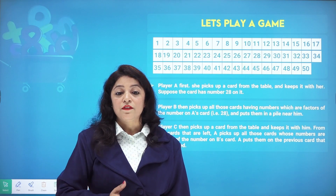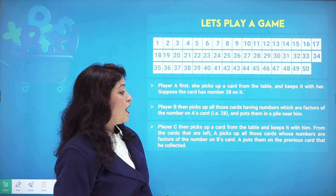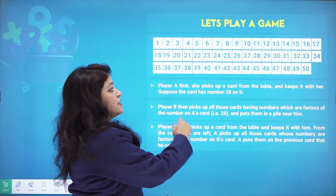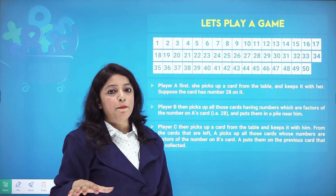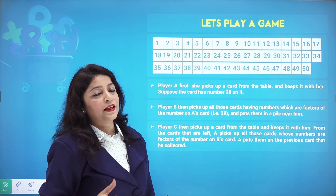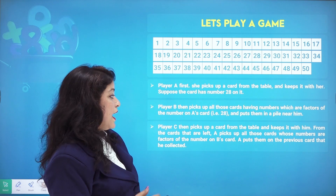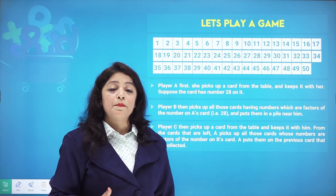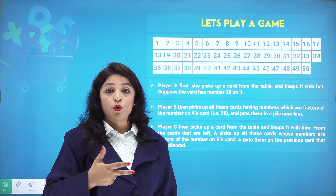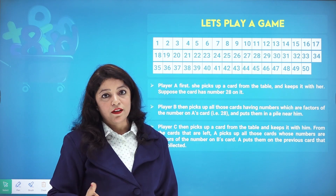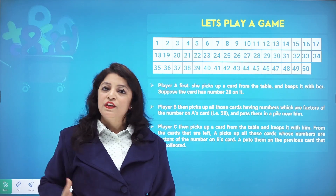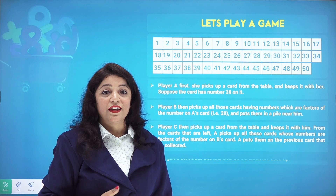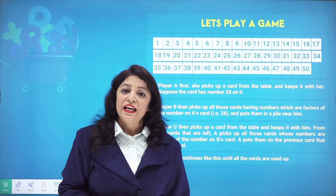Now Player C enters the game. Player C picks a card from the remaining cards on the table, and then finds all the factors of the numbers on Player B's cards — that is, the factors of 1, 2, 4, 7, 14, and 28 — collecting cards not already taken by Player B.